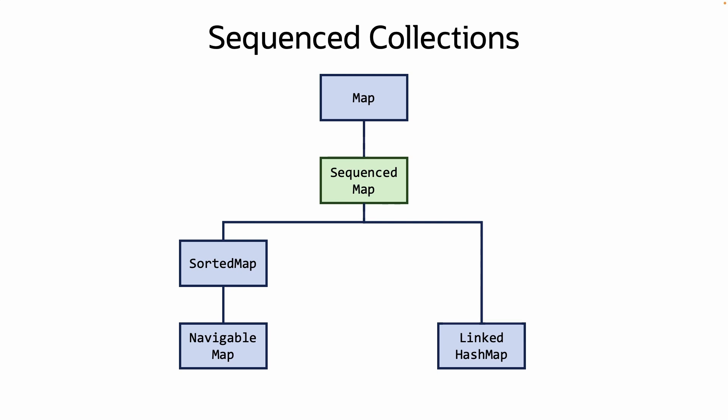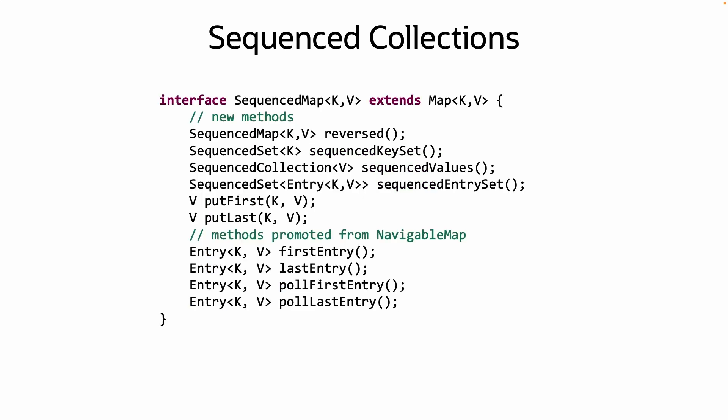On the map side, the new SequenceMap has been added. As mentioned earlier, the sequence collection API is for collections with a defined encounter order. Notably, this does not include the commonly used HashMap class, as it does not guarantee encounter order. The SequenceMap interface provides much of the equivalent functionality that SequenceCollection does, but also provides sequencedKeySet, values, and entrySet, and pollFirstEntry and pollLastEntry.